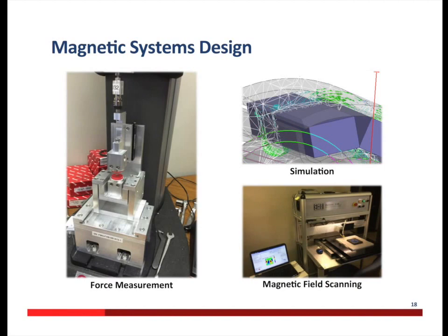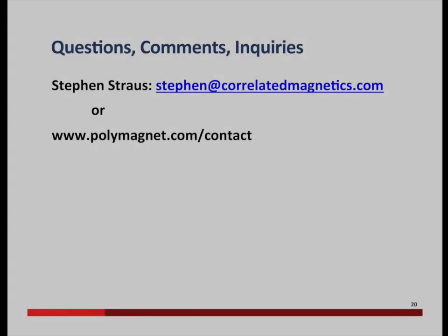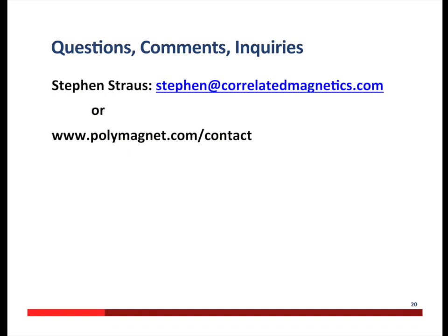We create custom polymagnets and the polymagnets in the polymagnet catalog using magnetic system design tools, including simulation and field and force measurement that complements our magnetization technology. You can buy polymagnets — even just one magnet — from our US-based partners, Amazing Magnets in California and Industrial Magnetics in Michigan. High volumes of polymagnets come out of our manufacturing facility in China that can ship to your manufacturing facilities in China or anywhere around the world. And if you want to see for yourself how polymagnets work and build a prototype product around them, it's not too late to order them today for delivery tomorrow with overnight shipping. With that, I'm going to wrap up our prepared remarks for the webinar.